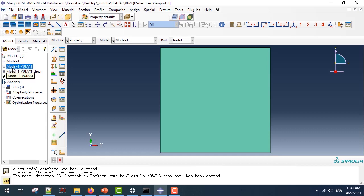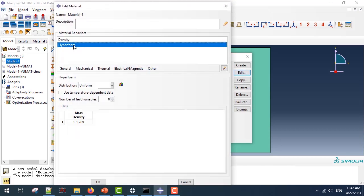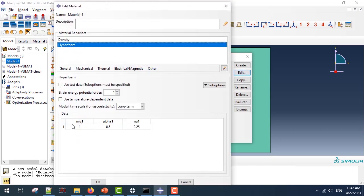The first one uses the ABAQUS built-in function for hyperfoam materials, which is a polynomial function. The second one uses our VUMAT for uniaxial stretches, and the third one uses our VUMAT for shear stretches. The purpose of the third model is to show you the instability of the Blatz-Ko simplified model.